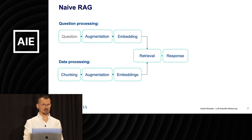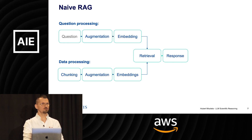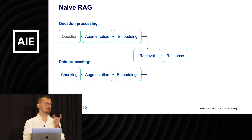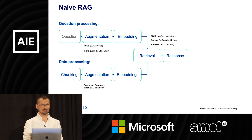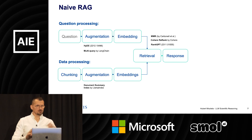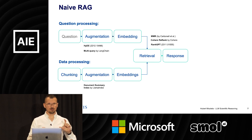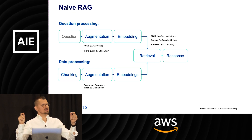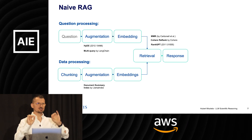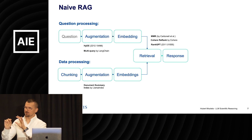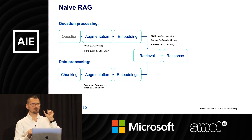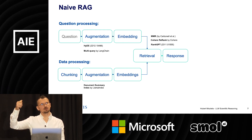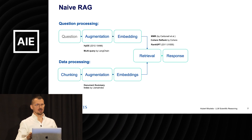We all know what naive RAG is. You have a question, you process the question, you process data previously, you represent both of them in a given latent space, you do some kind of retrieval over the embeddings, and you get the response. There are a lot of different tricks — things like re-ranking or document indexing — relating to different pieces of the RAG pipeline. They are all for slightly different purposes: fixing the matching between question and answer, or improving retrieval of the top documents or chunks.